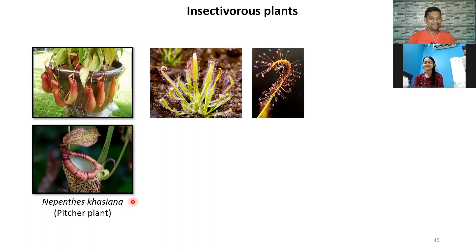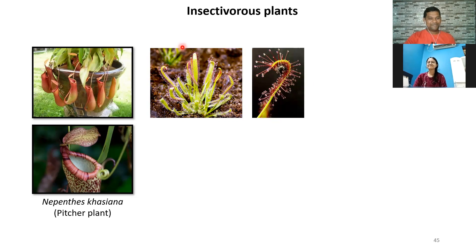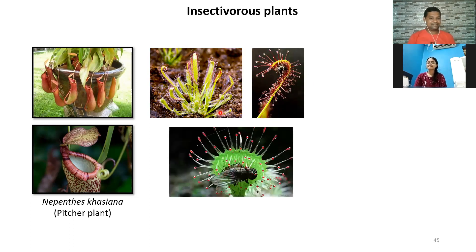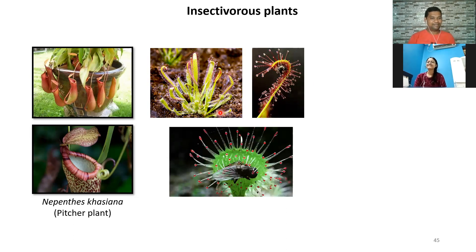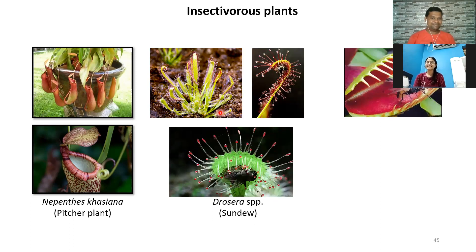The sundew plant, Drosera, is also very interesting. There are leaf-like structures with tentacle projections above which there are very transparent dewdrop-like structures. Sunlight glistens on them, attracting insects. But it's actually a trap — the substance is sticky and insects cannot get out. The leaf curls over the insect and digests it. As the insects sit there, it will curl all over. Again, insects are not learning a lesson at all. Attraction can be dangerous.